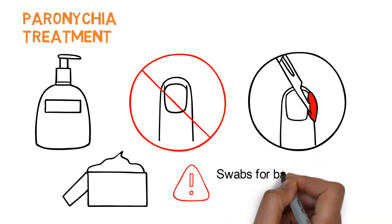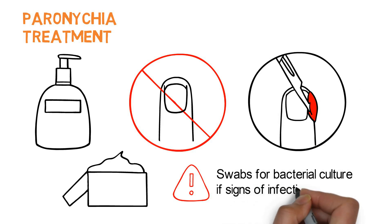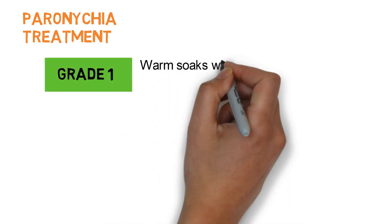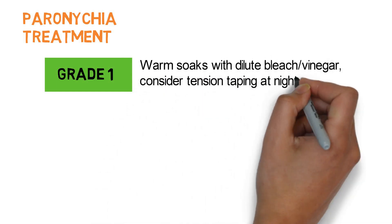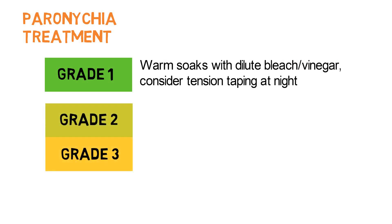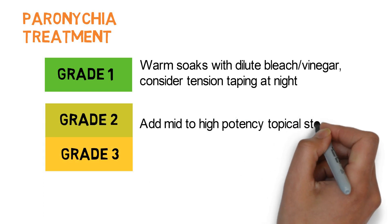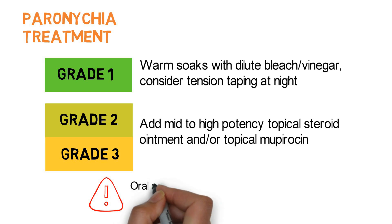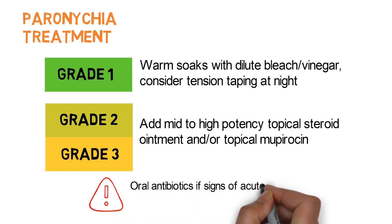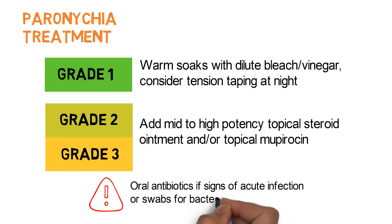Consider swabs for bacterial culture if signs of infection are present. For grade 1 toxicities, the patient can do warm soaks with dilute bleach or vinegar three times a day, and tension taping at night may be considered. For grades 2 and 3, add a mid- to high-potency topical steroid ointment and/or topical mupirocin. Consider oral antibiotics if there are signs of acute infection or swabs for bacterial culture are positive. Dose reduction or discontinuation may be required.